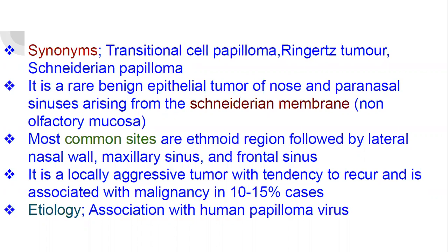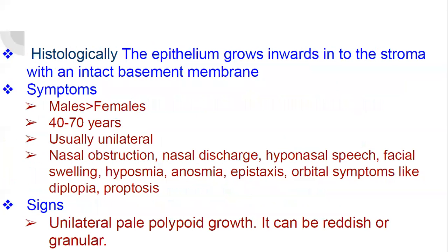Most common sites are the ethmoid region, followed by lateral nasal wall, maxillary sinus, and frontal sinus. It is a locally aggressive tumor with a tendency to recur and is associated with a malignancy rate of 10-15%. Etiology: there is an association with human papilloma virus.